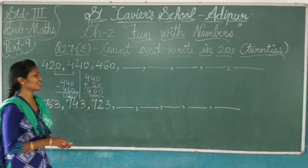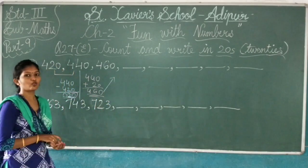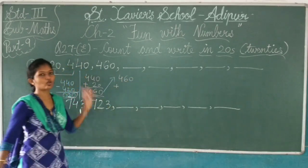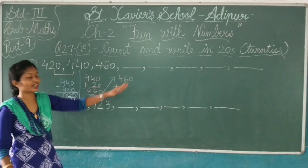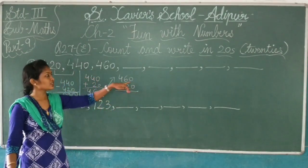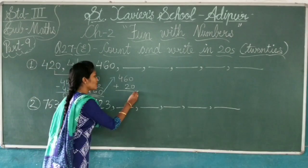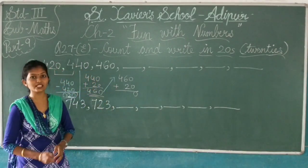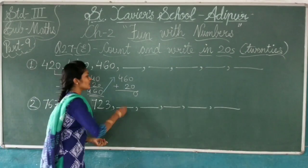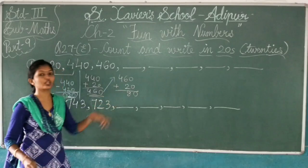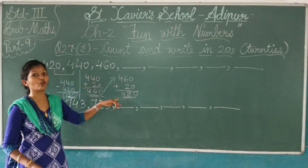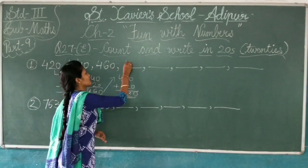Now I will take this 460 plus 20. So I will write plus 20. 0 plus 0 is 0, then 6 plus 2 is 8. So I will write 8. Now 4 as it is. So what is the answer? 480.